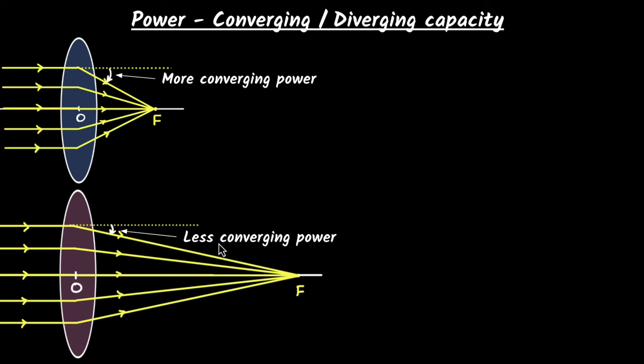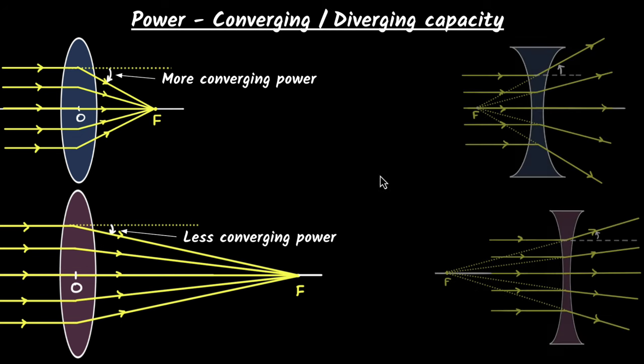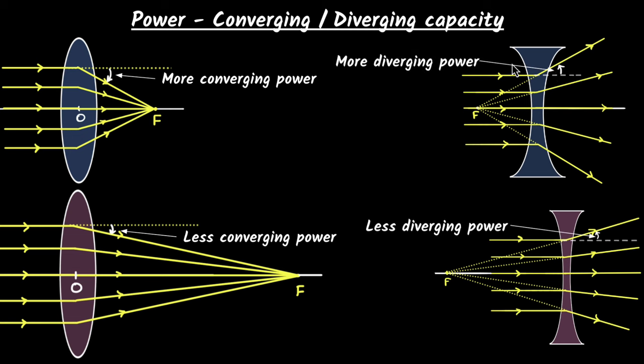Does that make sense? Similarly, if you consider diverging lenses, you can clearly see over here, look, the ray has bent more, look at the angle, compared to over here, look, the angle is smaller. And so we would again say, this has this time more diverging power and this has less diverging power.